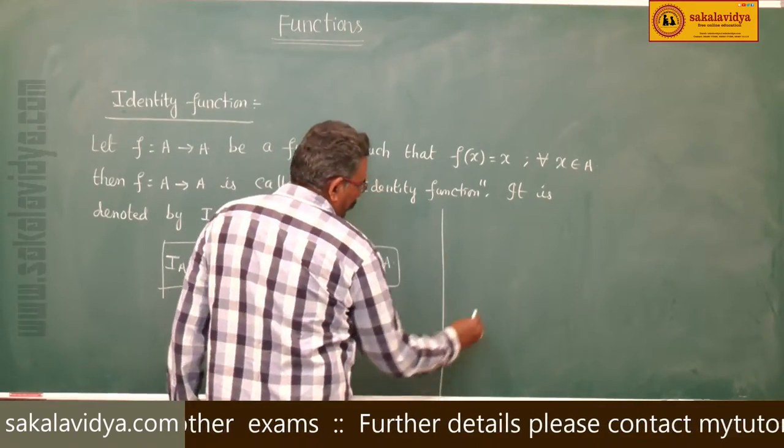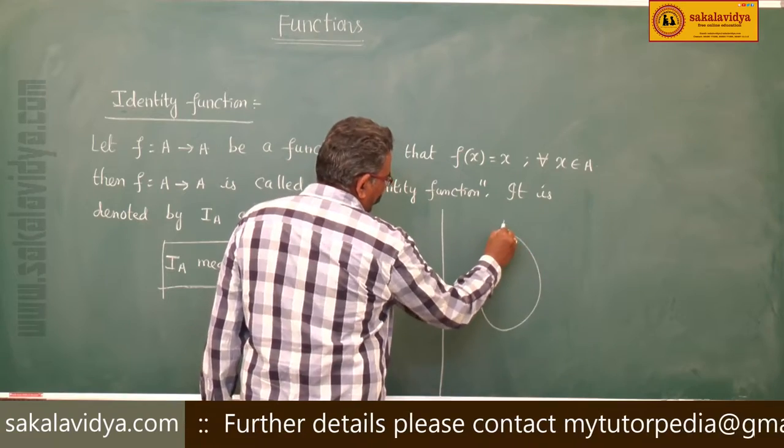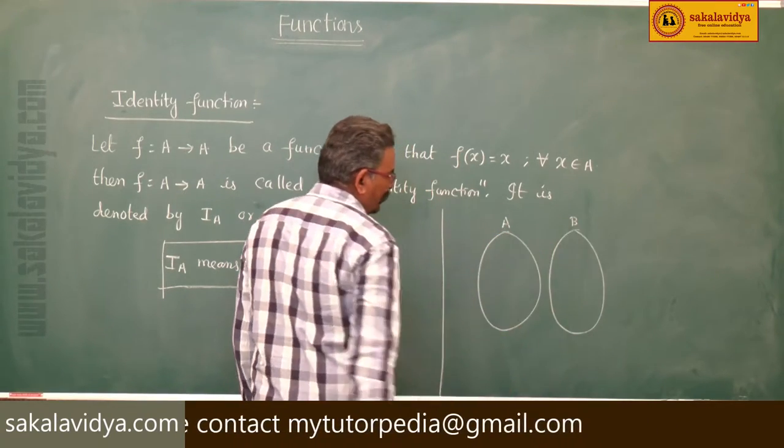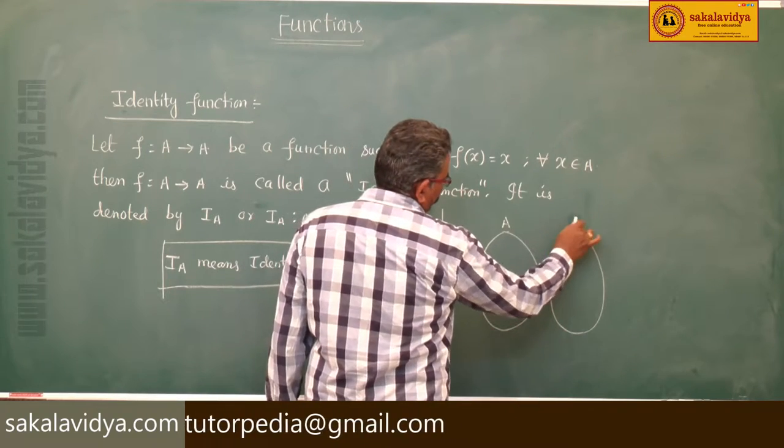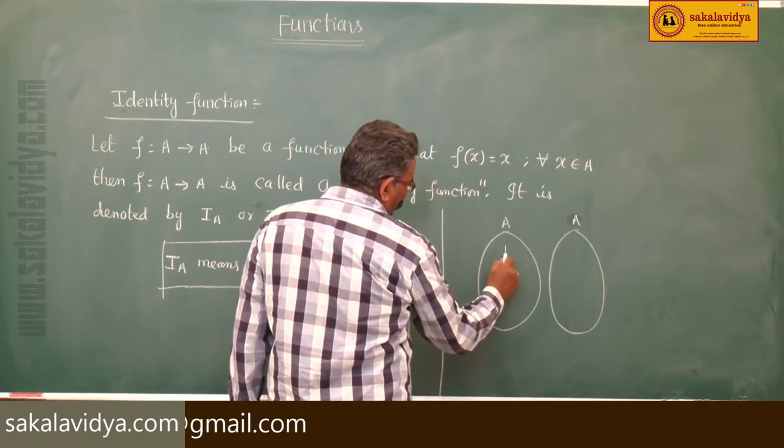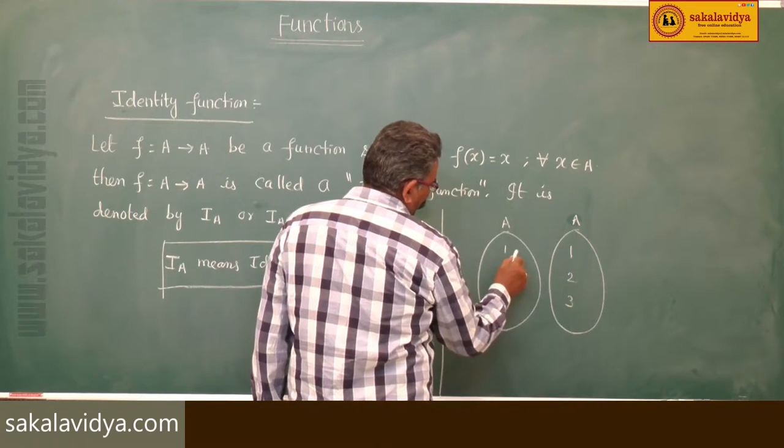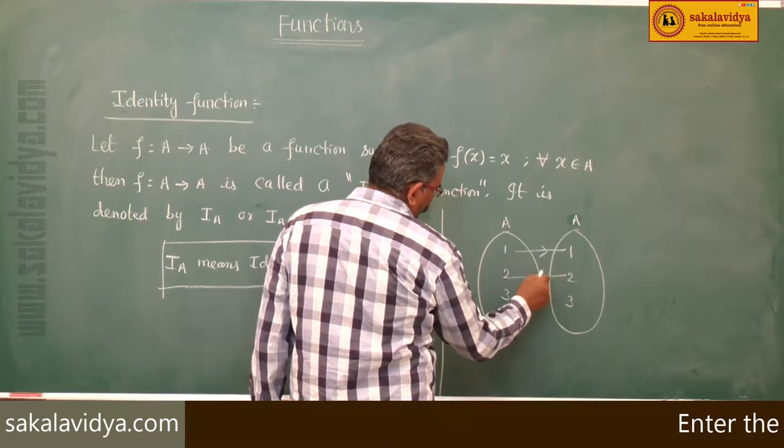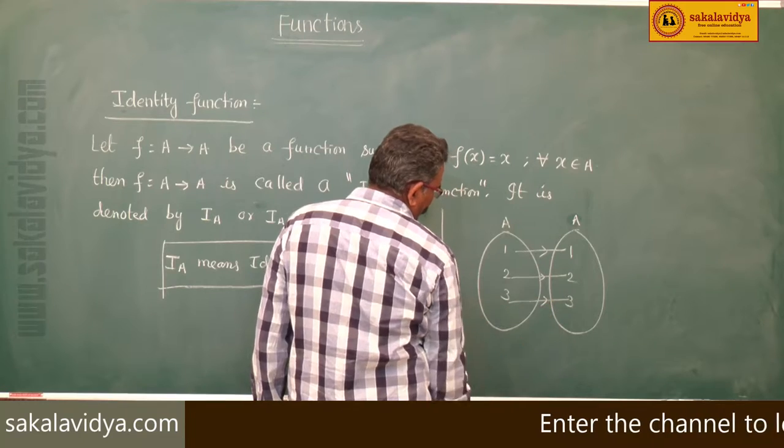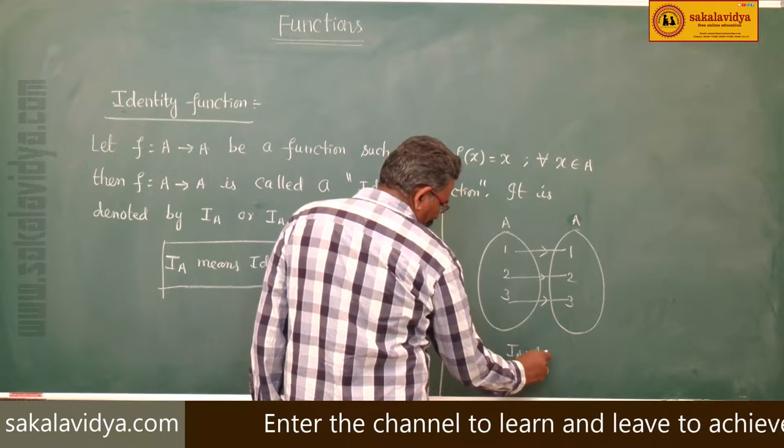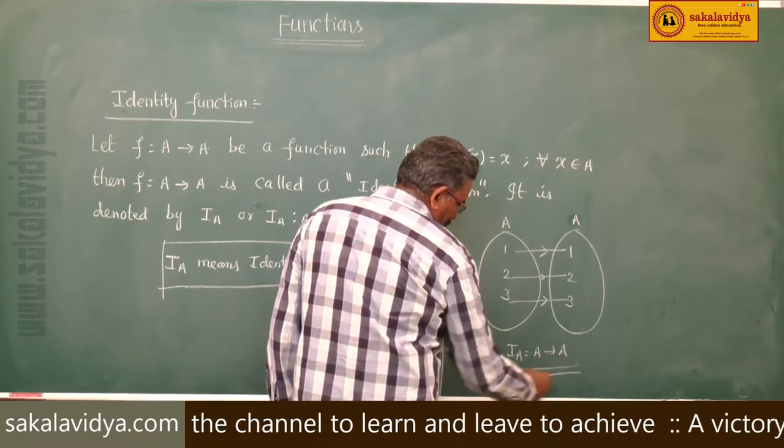You can take an example like this. This is A, this is B, or we can say this is A: 1, 2, 3; 1, 2, 3. 1 maps to 1, 2 maps to 2, 3 maps to 3 only. This is I_A, A to A is identity function.